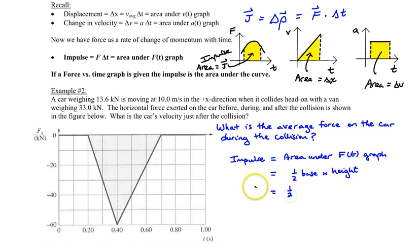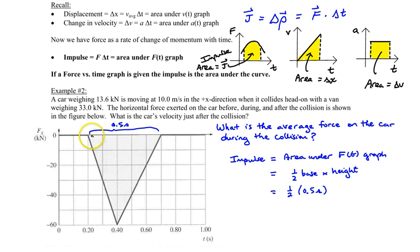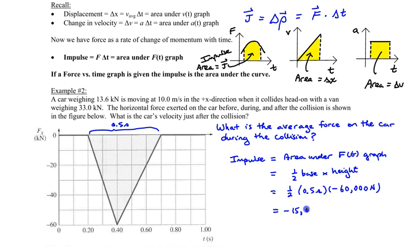That's one-half times the base, which is 0.5 seconds — that's 0.7 minus 0.2 — multiplied by the height, which is negative 60 kilonewtons, or negative 60,000 newtons. So the impulse works out to be negative 15,000 newton-seconds.